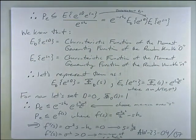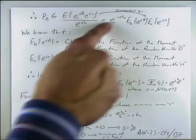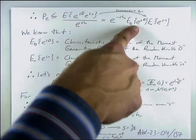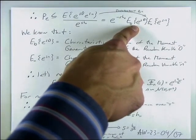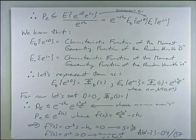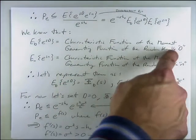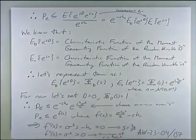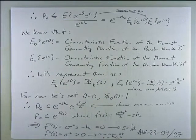What we get is the characteristic function (moment generating function) of the random variable d, times the characteristic function of the noise N. The characteristic function of the Gaussian noise is well-known. Now, if we first assume d = 0 (no ISI), the characteristic function of d equals 1, and we're left with just the noise MGF term.